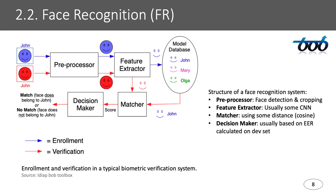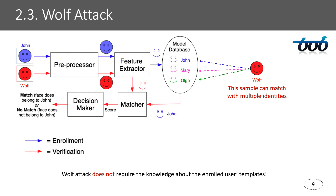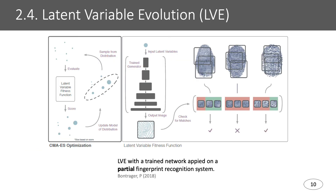Next I will talk about face recognition (FR). A face recognition system has multiple stages of processing, including preprocessing, feature extraction, matching, and decision making. For a user, there are two phases: the first one is enrollment, when a user is enrolled into the system, and the second one is verification, when the face recognition system verifies if the user exists in the database or not. In this slide, I talk about the wolf attack, in which a wolf sample is falsely accepted by the face recognition system because it has the ability to match with multiple templates. The wolf attack is dangerous because it does not require knowledge of the enrolled user templates.